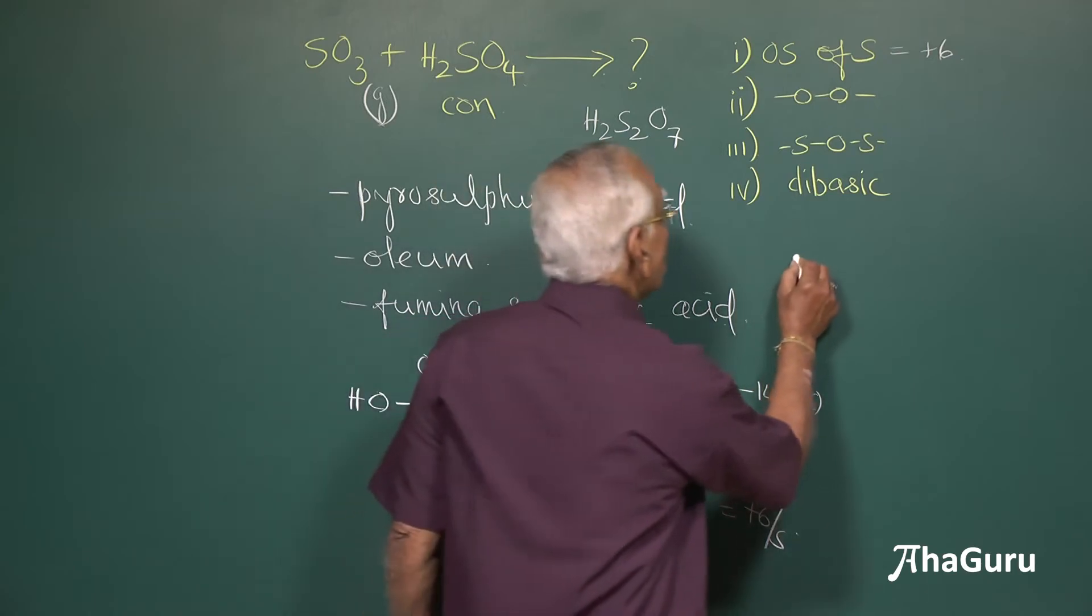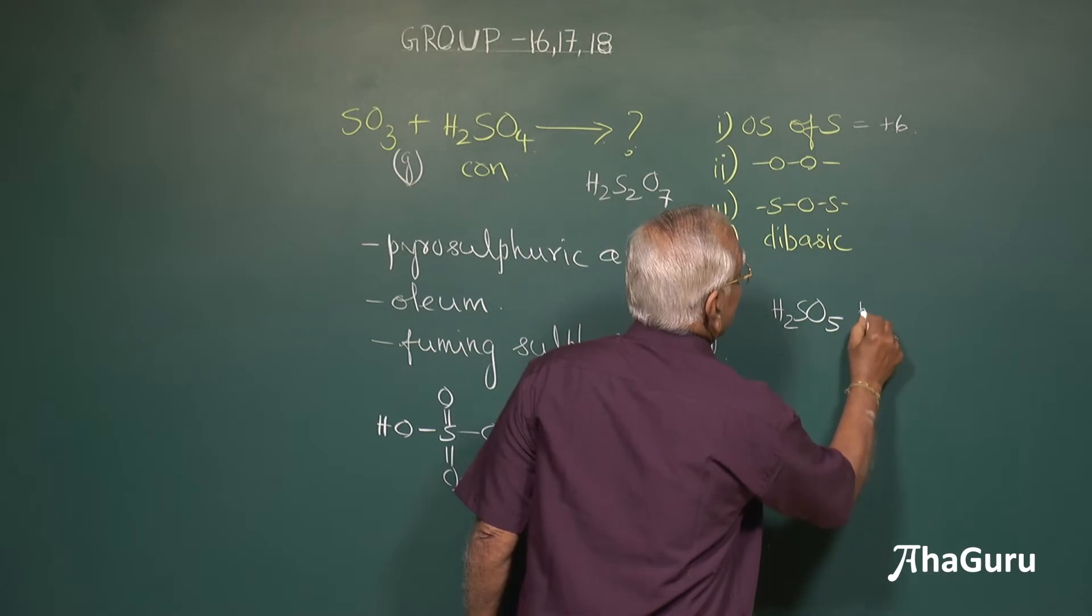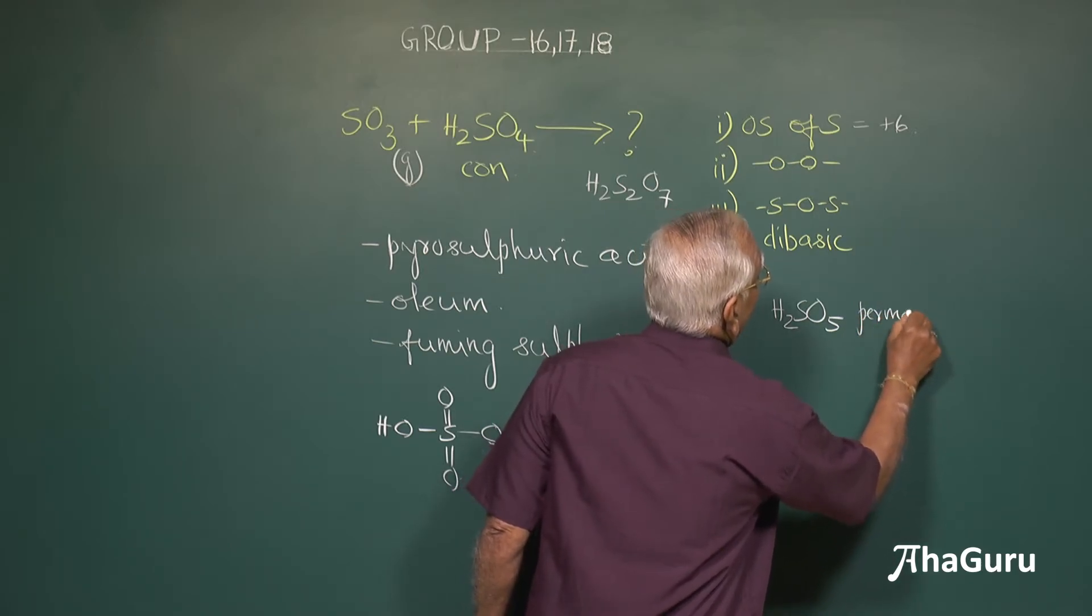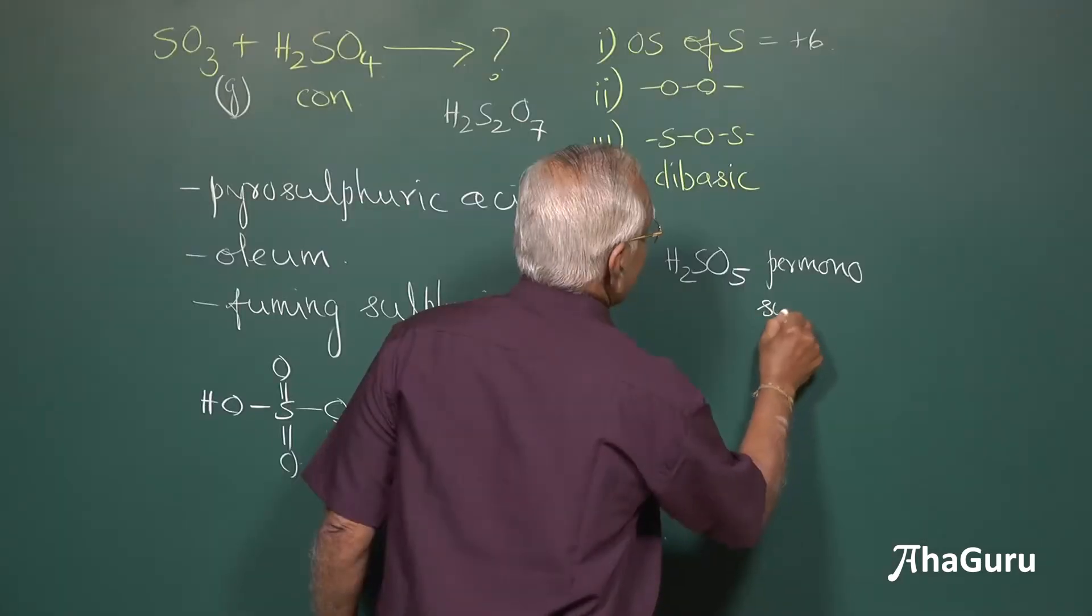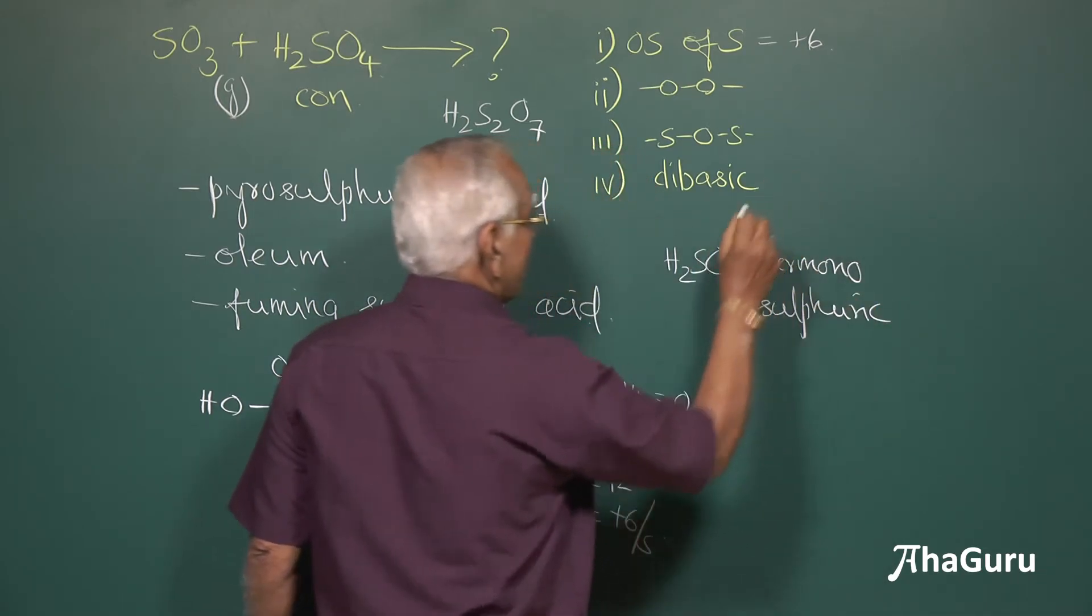For example, H2SO5, permonosulfuric acid is a peracid, this is called permonosulfuric acid, permonosulfuric acid, it has got the peracid.